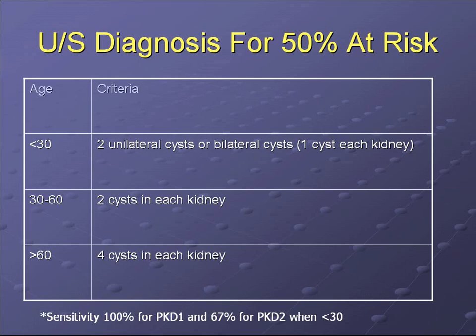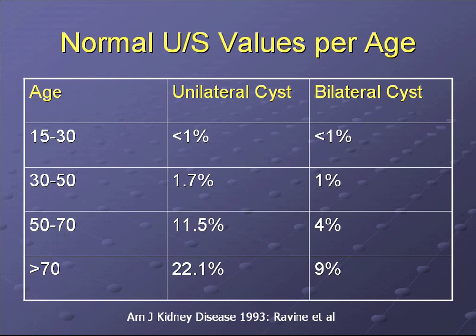The ultrasound diagnosis for someone known to be 50% at risk depends on age. In patients younger than 30, you need two unilateral cysts or one cyst in each kidney. In patients 30 to 60, two cysts in each kidney. In patients greater than 60, four cysts in each kidney. Normal ultrasound values for age show that less than 1% of those aged 15 to 30 have cysts; 1.7% of those aged 30 to 50 have unilateral cysts and 1% bilateral; 11.5% of those aged 50 to 70 have unilateral and 4% bilateral; and 22% of those over 70 have unilateral and 9% bilateral cysts.